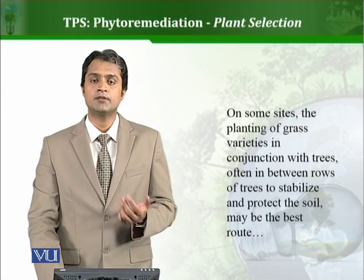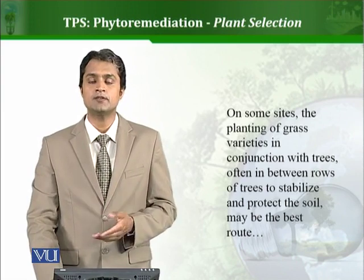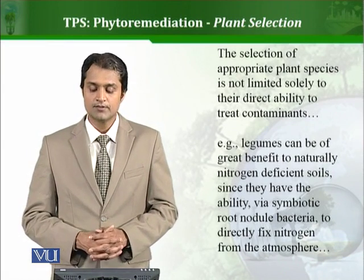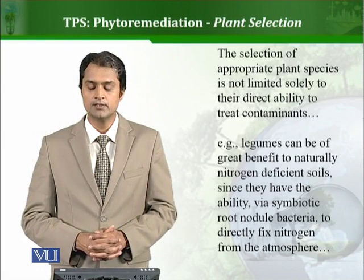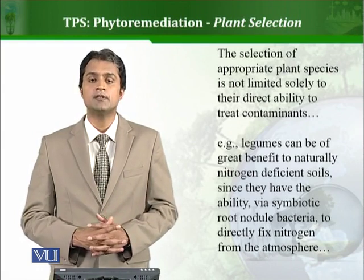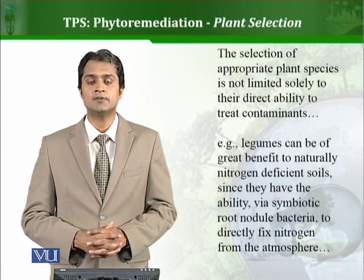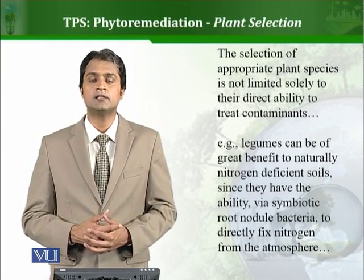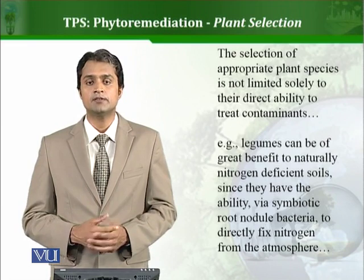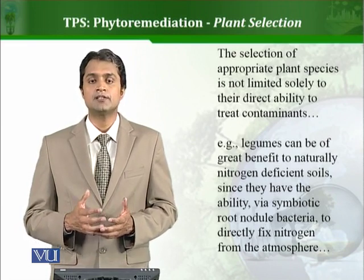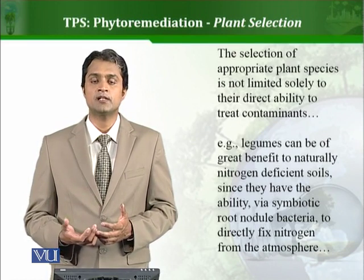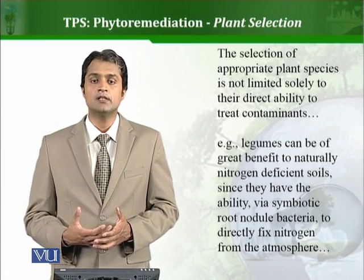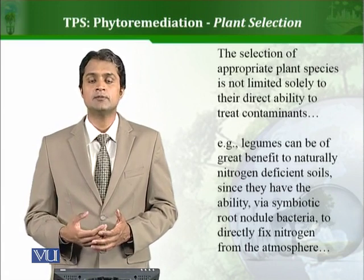Sometimes we have to use more than one type of plant species in conjunction. The selection of appropriate plant species is not limited solely to their direct ability to treat contaminants. Sometimes the plant we are using is not directly degrading or transforming the contaminant — instead, it is helping other plant species around it or certain bacteria present in the soil.